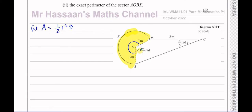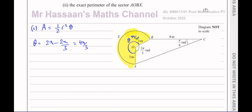The whole circle is 2π radians and the minor angle AOB is 2π/3, so the major sector angle θ equals 2π minus 2π/3. Putting that over 3: that's 6π/3 minus 2π/3, which gives 4π/3. Checking: 4π/3 plus 2π/3 equals 6π/3, which is 2π. So θ = 4π/3.